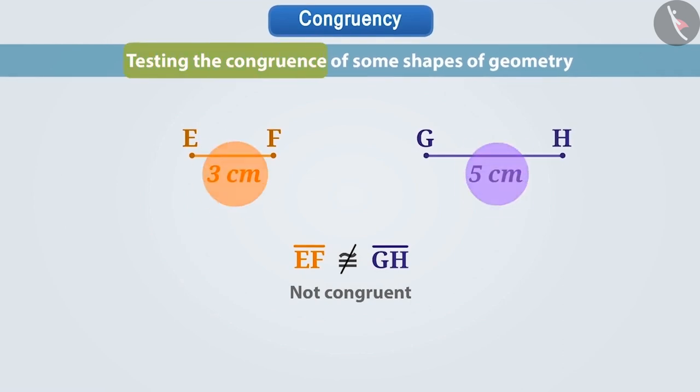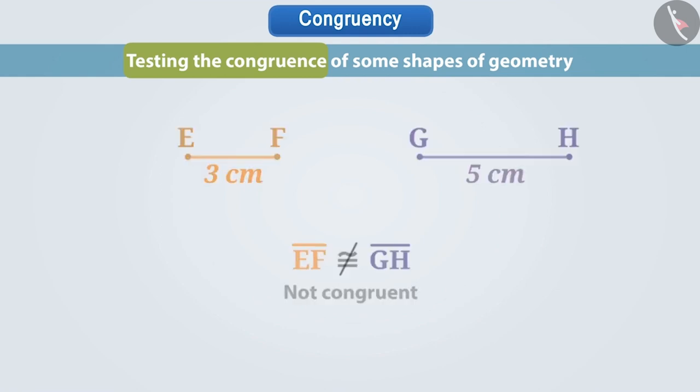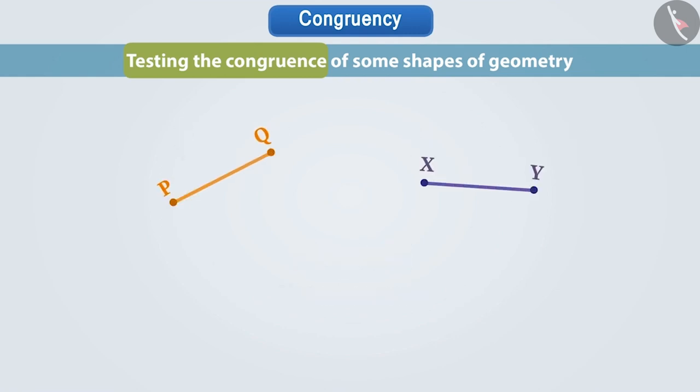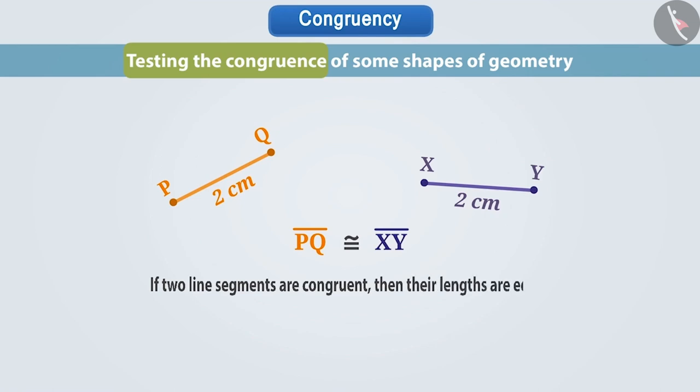Therefore, the congruency of the line segments is checked only on the basis of their length. No matter what the position of the line segments are, if the lengths of the line segments are equal, then they are congruent. On the contrary, we can also say that if two line segments are congruent, then their lengths are equal.